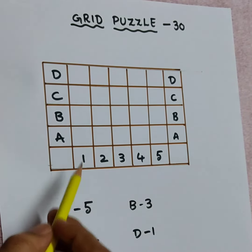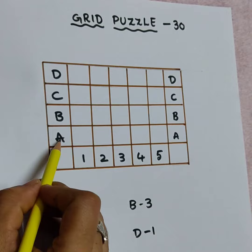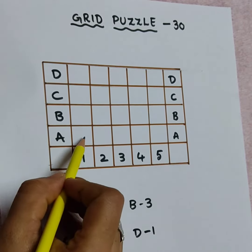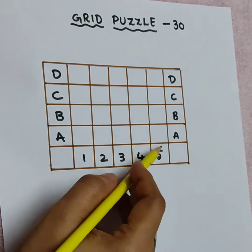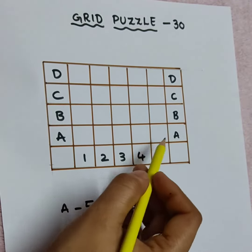So we have to find out A, 5. Here A, where is 5? A, 1. No. A, 2, A, 3, A, 4, A, 5. So A, 5.